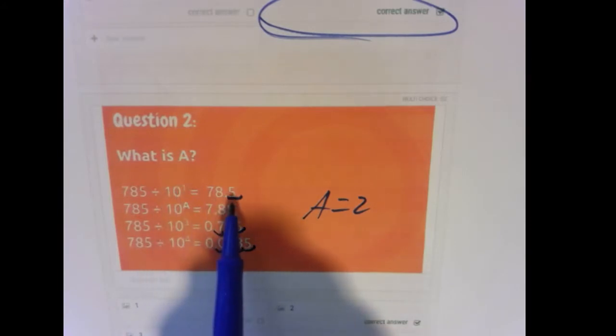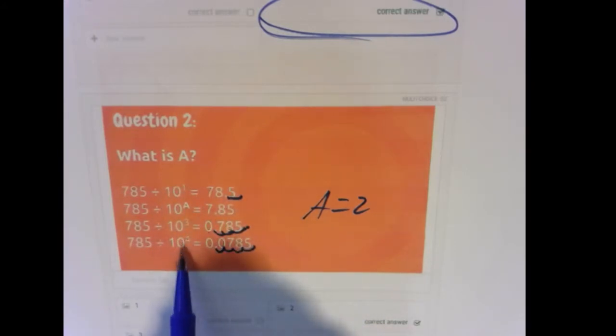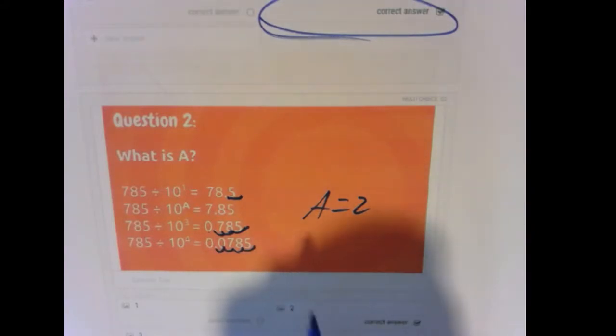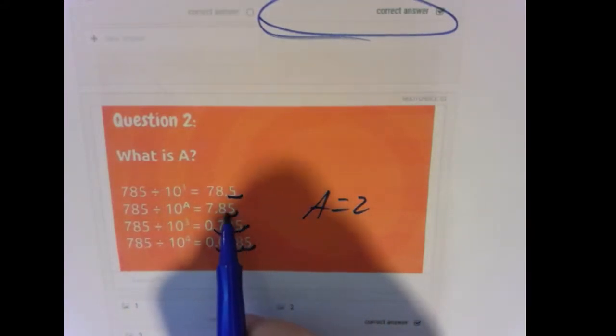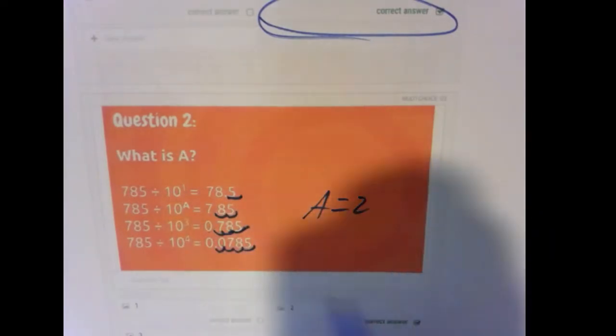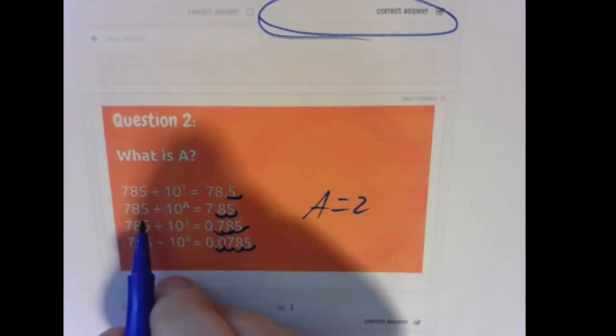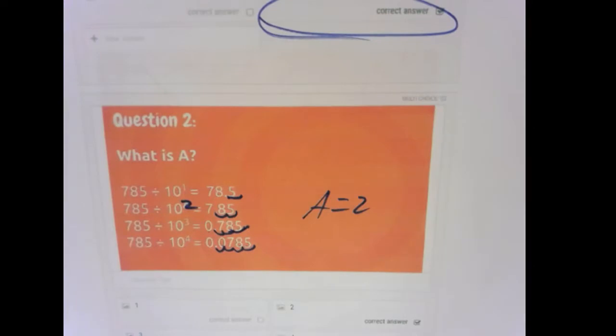So 10 to the first power, move it once. 10 to the third power, move it three times. 10 to the fourth power, we move it four times. So what are we doing? We're moving the decimal two spots. So really, what we're doing is 785 divided by 10 squared. And that power that we're looking for is 2.